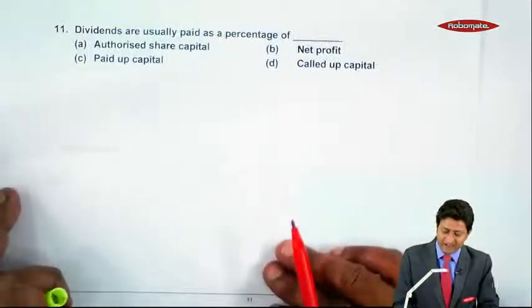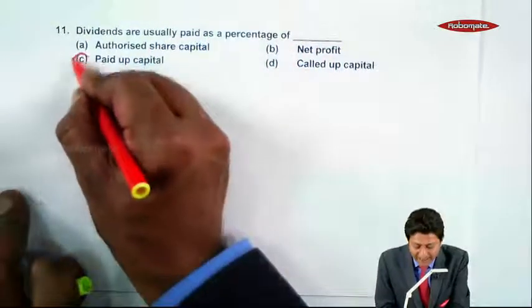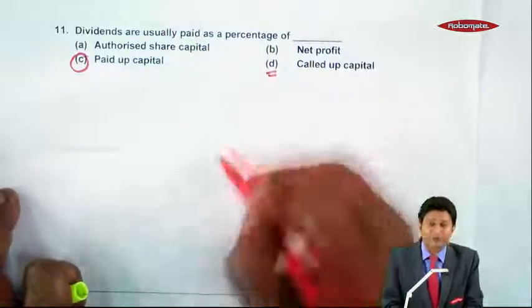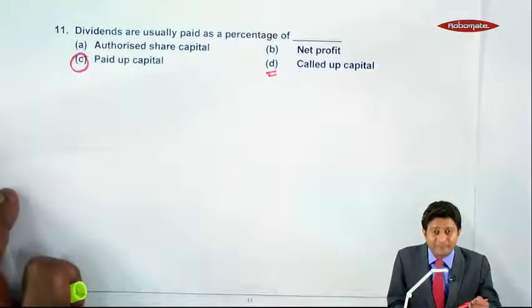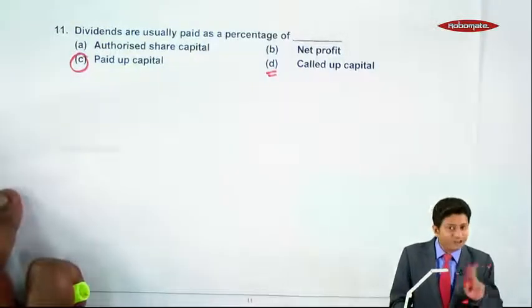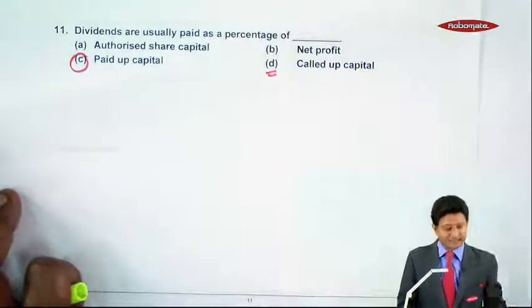Question 11: Dividends are usually paid as a percentage of—it's called up capital. Under called up comes paid up as well as calls in arrears. On calls in arrears, dividend is not paid; interest is charged.